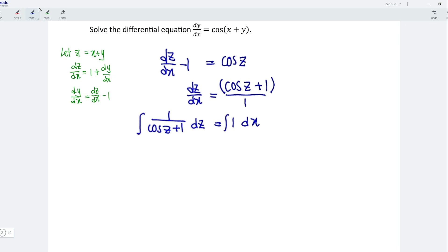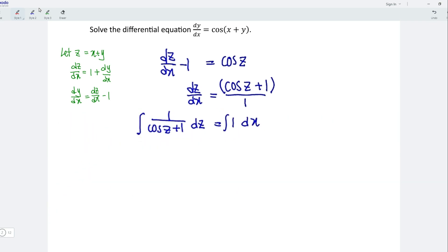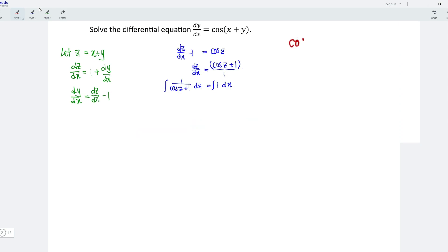Now let's integrate both sides with respect to the corresponding variables. To continue, I will first apply trigonometric identities. Consider the double angle of the cosine function, which is equal to 2 cos square theta minus 1. Let's rearrange and we should obtain cos 2 theta plus 1 equals 2 cos square theta.